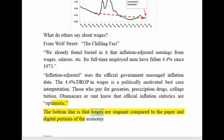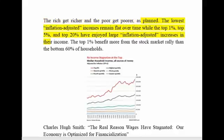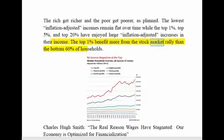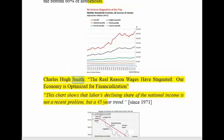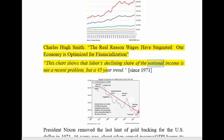The bottom line is that wages are stagnant compared to the paper and digital portions of the economy. The rich get richer and the poor get poorer, as planned. The lowest inflation-adjusted incomes remain flat over time, while the top 1%, top 5%, and top 20% have enjoyed large inflation-adjusted increases in their income. The top 1% benefit more from the stock market rally than the bottom 60% of households. Labor's declining share of national income is not a recent problem but a 45-year trend.